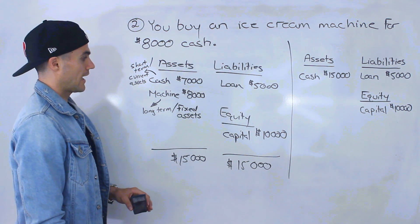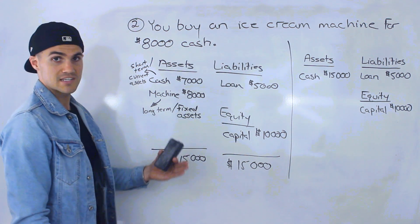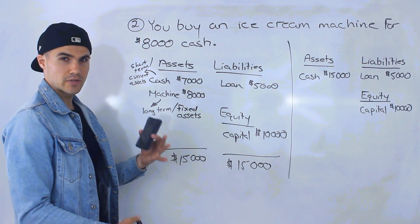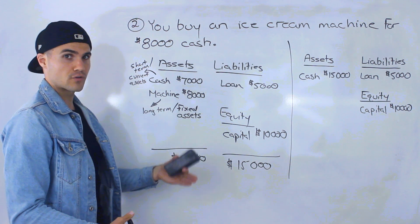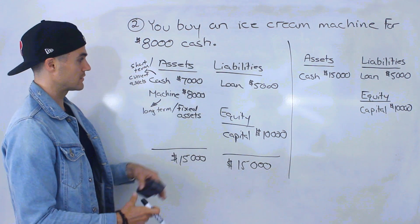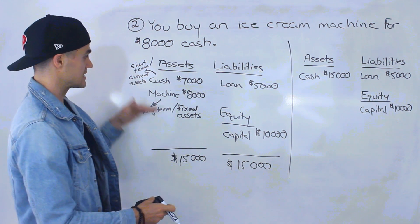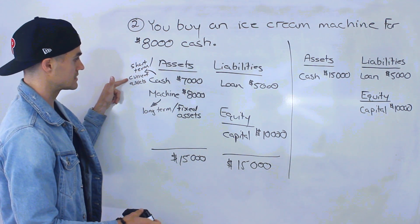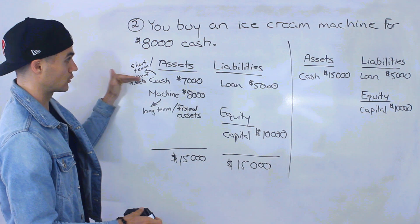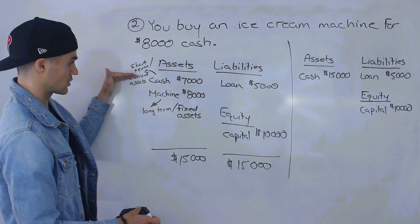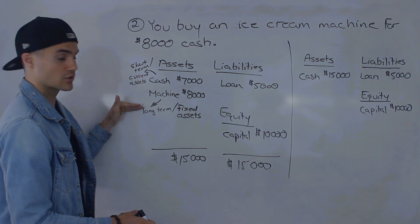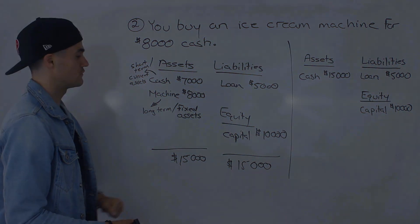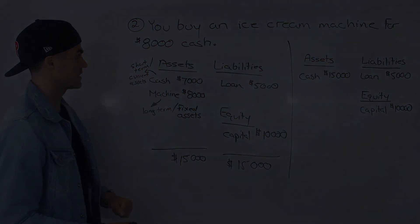As we get further into detail on the balance sheet, you're going to start seeing these subcategories under assets: current assets and then fixed assets as well.